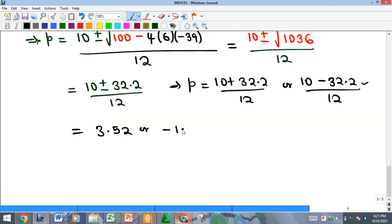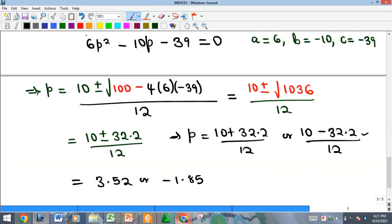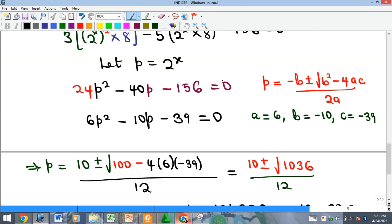You recall that here we called our p 2 raised to x. Because our p is a number in exponent form, it means that p cannot be negative.